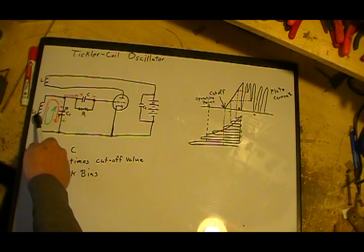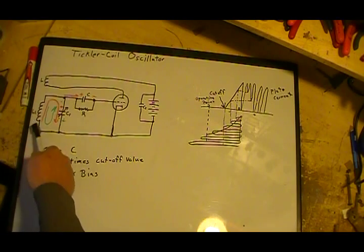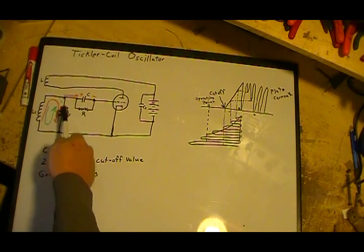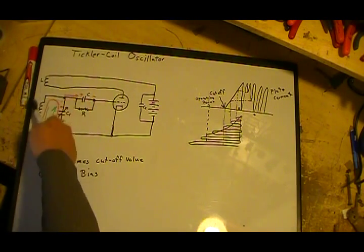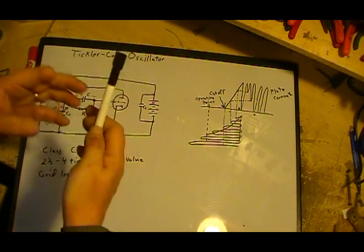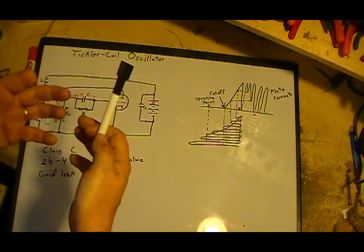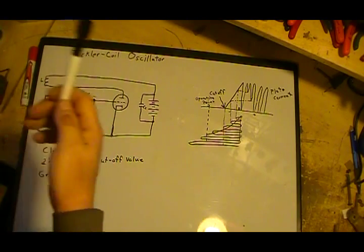But since what we're actually building up here is a counter EMF down here that is actually also 180 degrees out of phase, which in turn is actually putting it back in here, you get two 180 degree out of phases. That makes 360, so it's actually in phase.